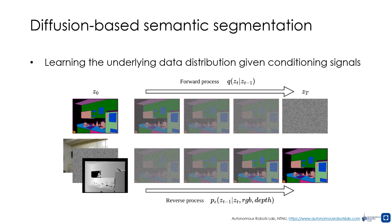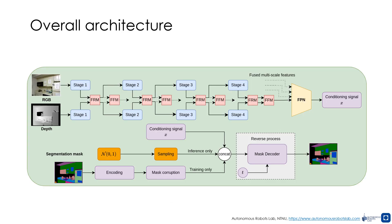The forward process adds Gaussian noise to the segmentation mask, and the reverse process removes it to reconstruct the mask. Our framework uses a deformable attention transformer as a hierarchical encoder for RGBD feature extraction. Fusion modules and a feature pyramid network create a conditioning signal for the noisy segmentation mask, which is progressively denoised to generate the mask during inference.